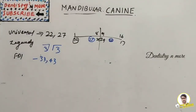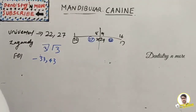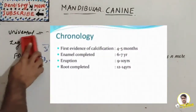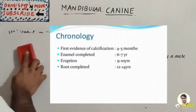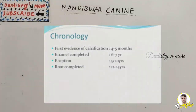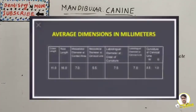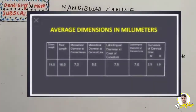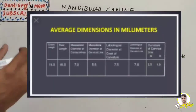Now the chronology. The first difference of calcification is at four to five months. Enamel is completed at six to seven years. Eruption occurs by nine to ten years, and root completion by 12 to 14 years.